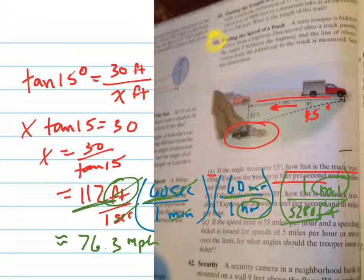So those are our two answers. You can do the same thing for part B, just changing the degrees to 20 degrees, and you'll get a similar answer.